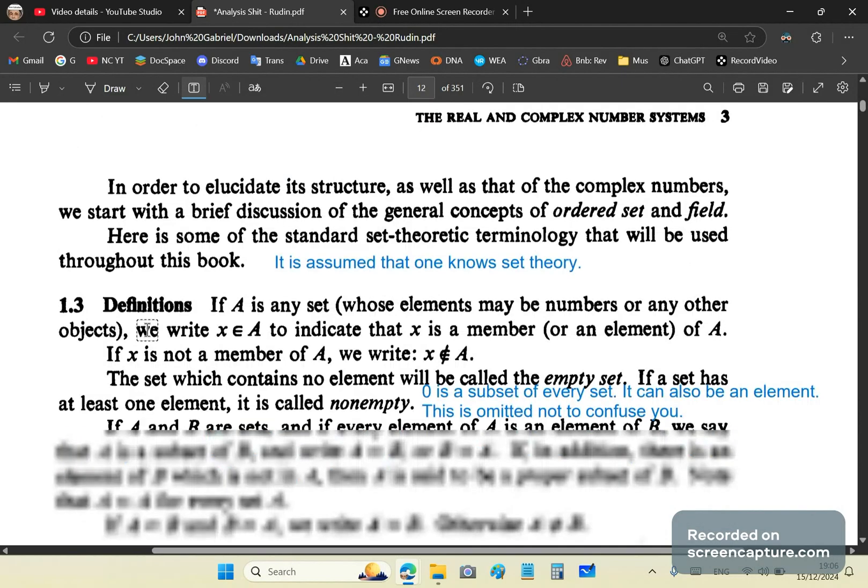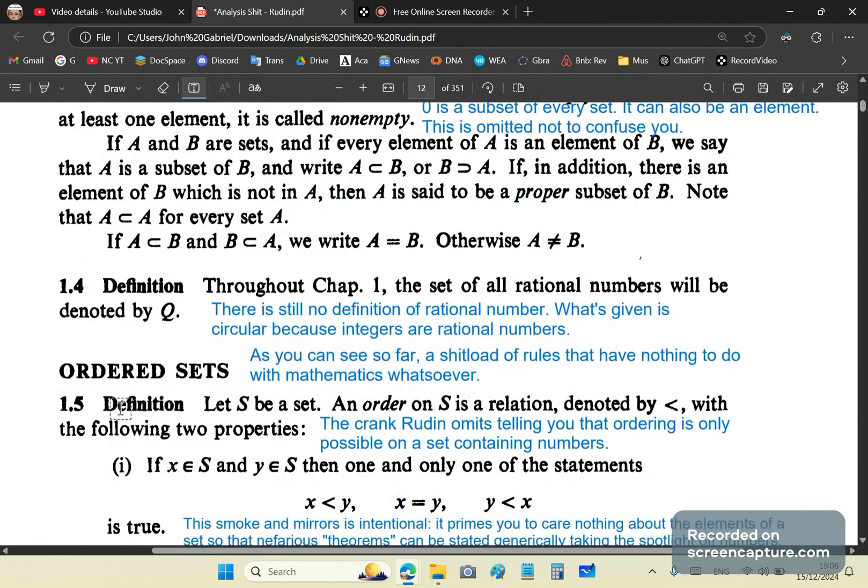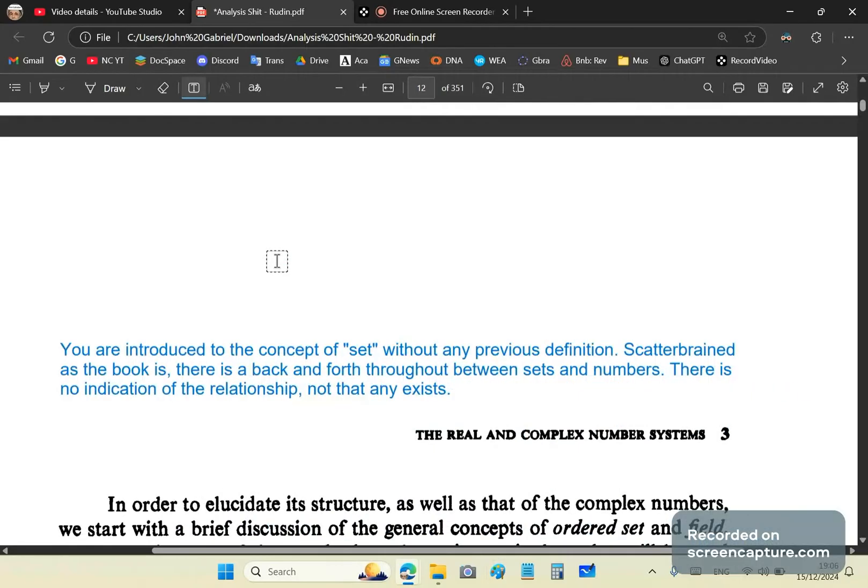Now, why hasn't he done that? Because he hasn't said what is the definition of a rational number. All he said is it's a number that can be represented as P over Q. But that is circular because P and Q are rational numbers. So basically what the fantastic and absolute moron is telling you is that a rational number is a fraction of rational numbers. So he hasn't told you anything about what a rational number is.